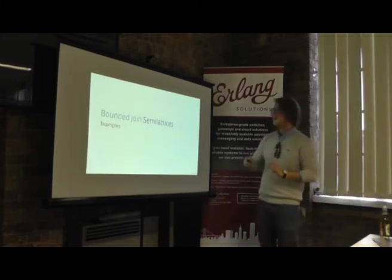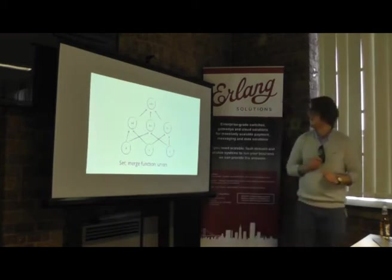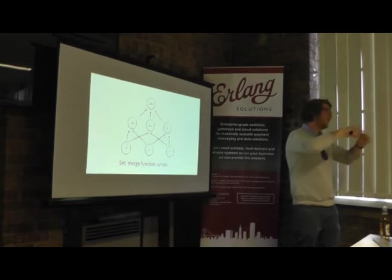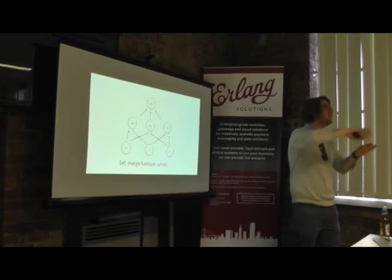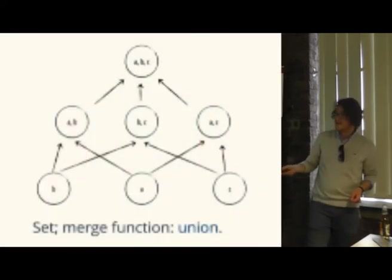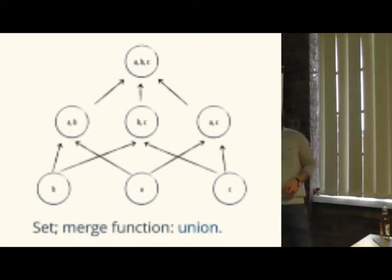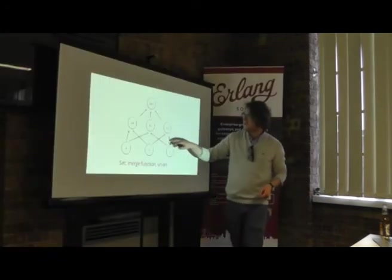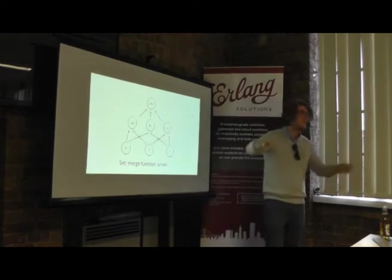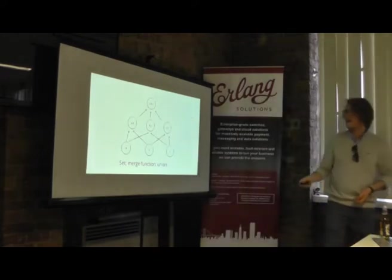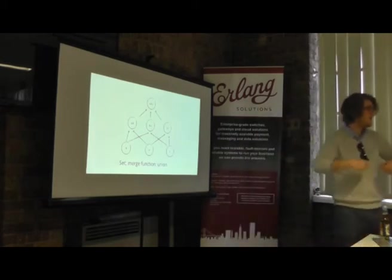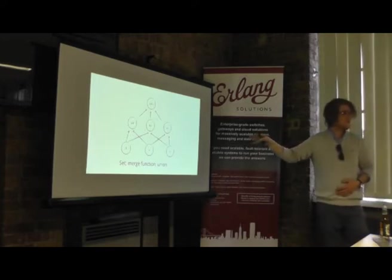A bounded join semi-lattice for a set: the merge function is union. If I have a set {a, c} and another set {b, c} and merge them, I get {a, b, c}. State always increases and I continuously accumulate values, applying merge functions. No matter what order these happen in, I end up with the right result — state continuously moves forward. Similarly, increasing natural numbers have a merge function of max: if I have 3 and 5 and merge them, I get 5 and will never get less.